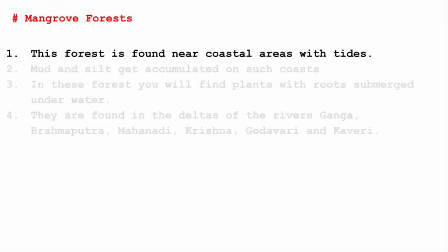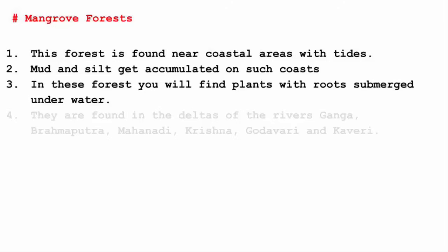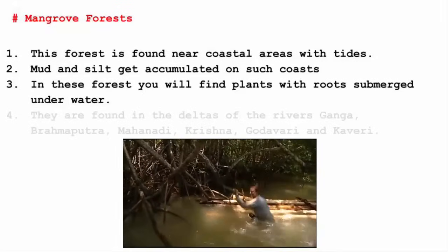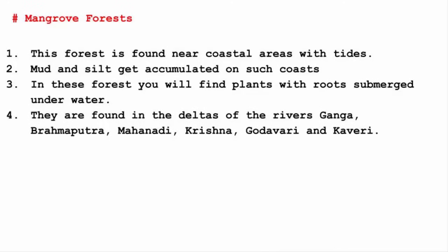Mangrove forests are found near coastal areas with tides. Tides help mud and silt accumulate on the coast — called 'kichar' or 'daldal' in Hindi. In these forests, you will find plants with roots submerged underwater. Mangrove forests are found in the deltas of the rivers Ganga, Brahmaputra, Mahanadi, Krishna, Godavari, and Kaveri. Deltas are regions where mud and silt accumulate over time with the help of tides. With this, we have covered all the major types of vegetation in India.